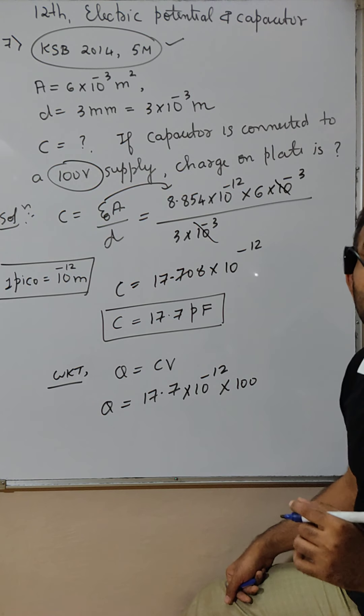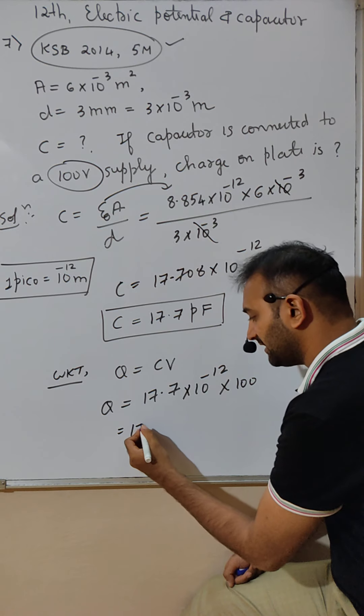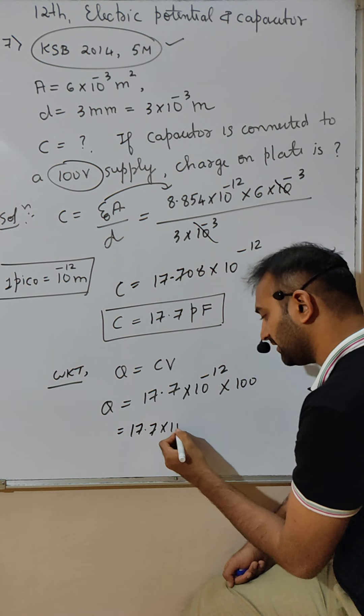100 means 10 raised to 2. From 12, 10 raised to 2 goes. So here remains 17.7 into 10 raised to minus 10.